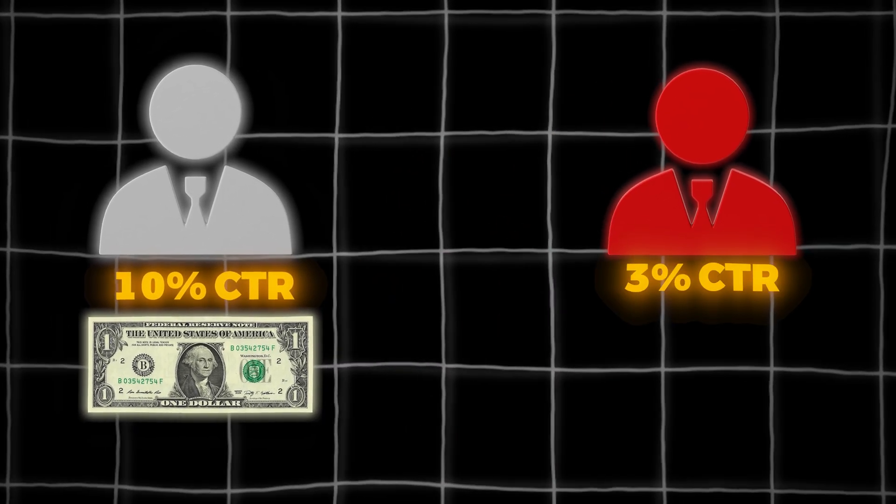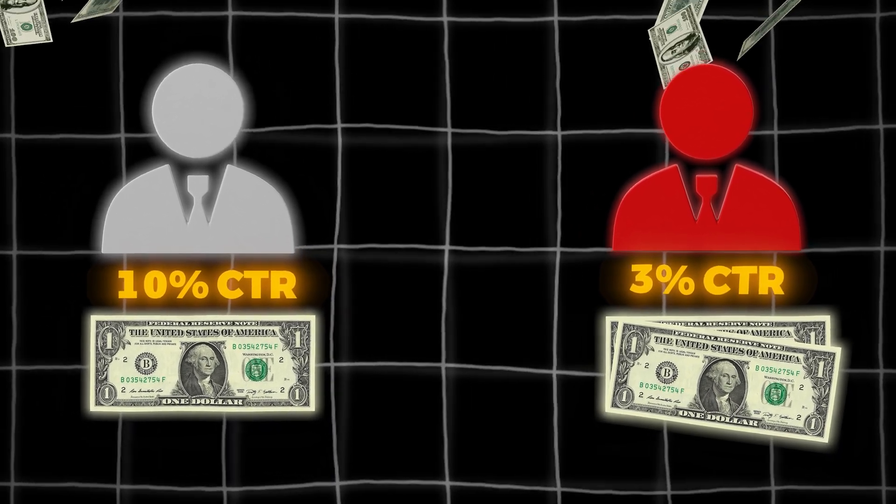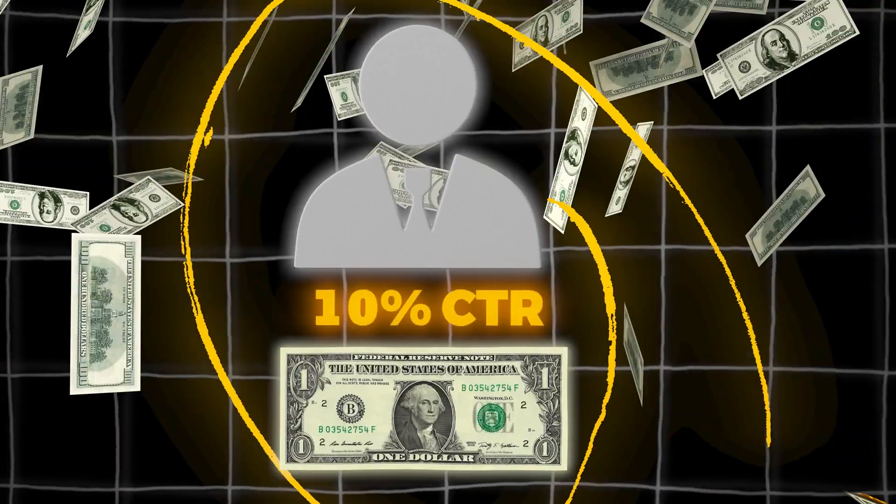A common way that I explain it is like this. If you have a click-through ratio of 10% and a CPC bid of $1, whereas your competitor has a click-through ratio of 3% and a bid of $2, it is actually more financially lucrative for Google to show your ads. Let's break down the maths: for every 100 searches with a click-through ratio of 10%, Google would get 10 clicks, so they would get $10.